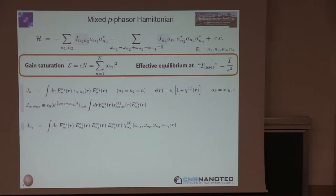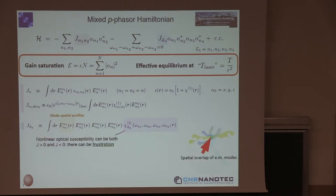These couplings J2 and J4 encode information about the spatial extension of the modes inside the cavity or open random medium, and also about the non-linear and linear susceptibility — things that cannot be computed from first principles because these systems are too complicated. The J4 is non-zero if and only if four modes have non-zero spatial overlap, and their sign and magnitude is tuned by the rather inhomogeneous value of the optical susceptibility. So there can be frustration in the system.